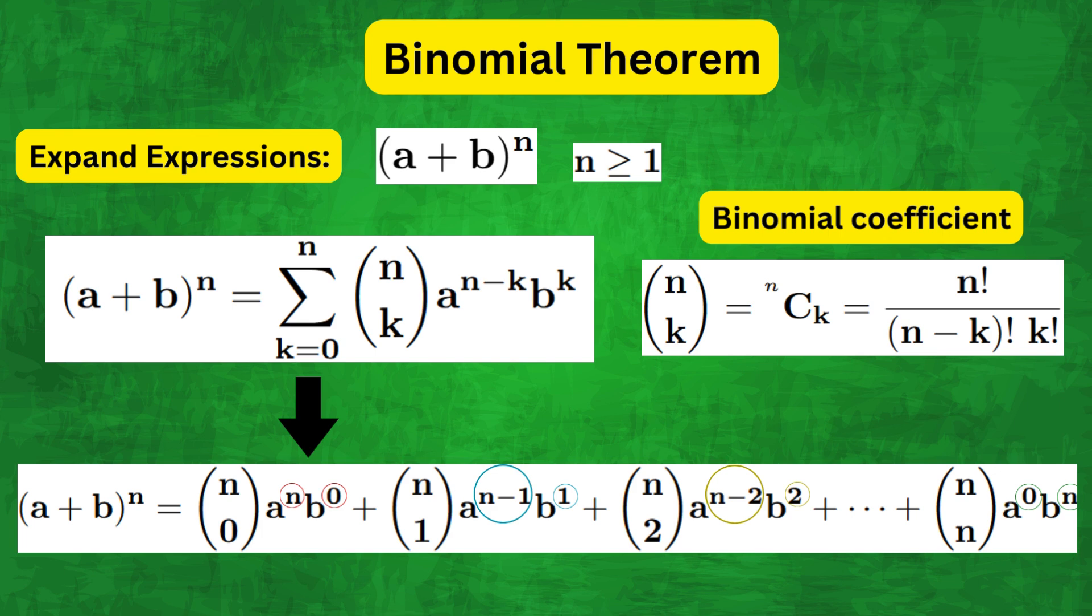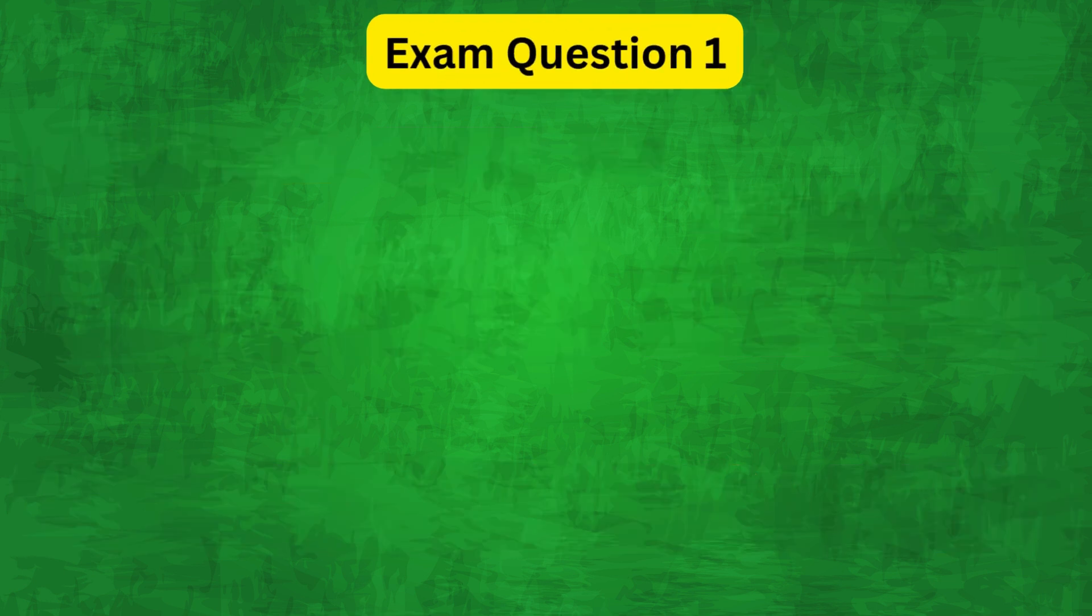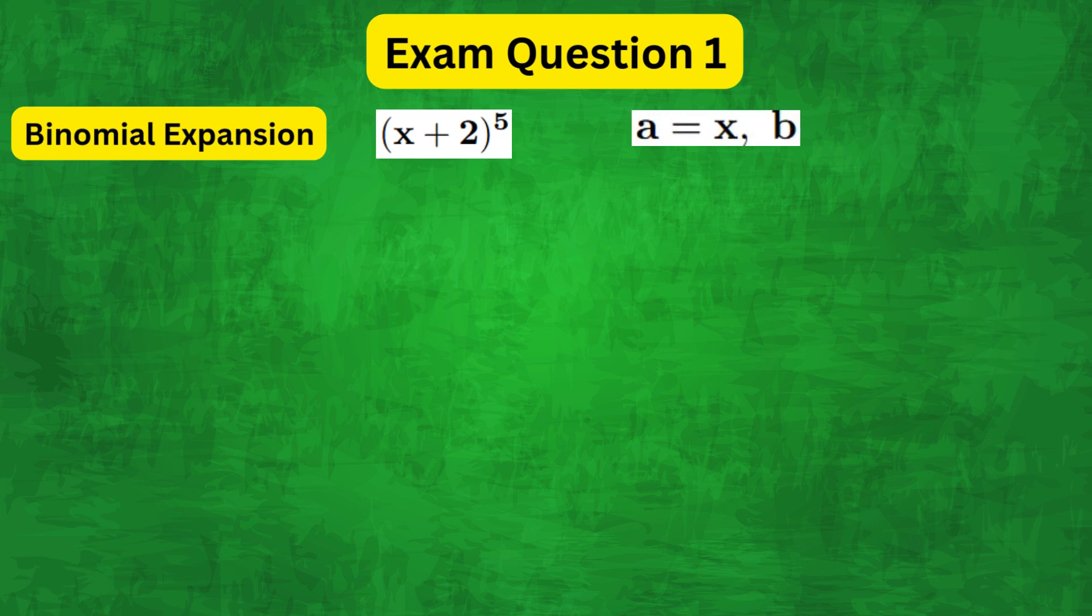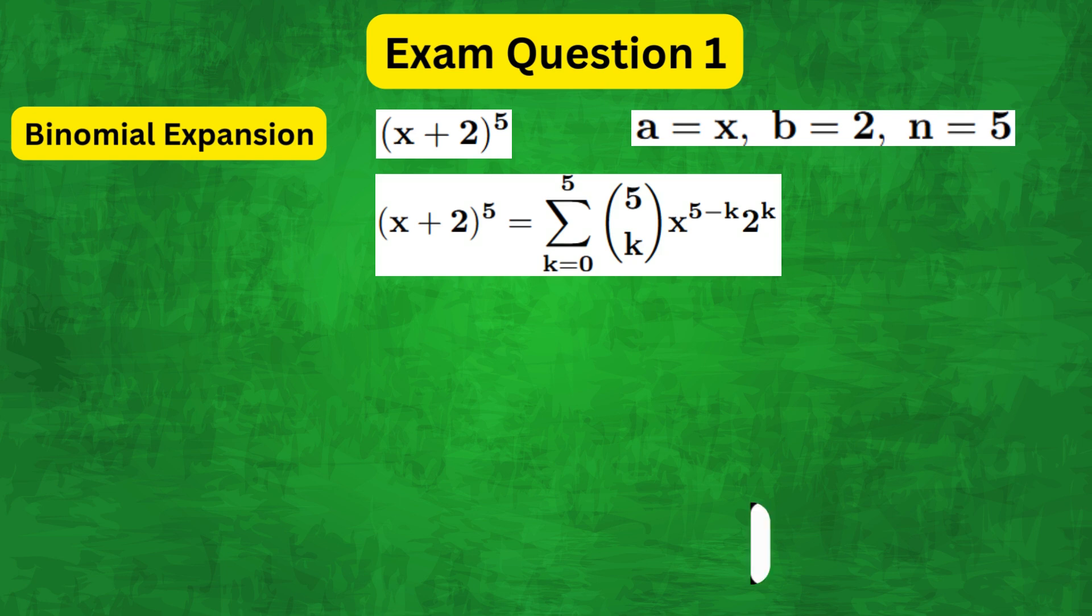Now let's apply these concepts to some common exam questions. For the first question we will consider the binomial expansion of x plus 2 to the power of 5. In this case a equals x, b equals 2, and n equals 5. Let's calculate each of the terms separately.